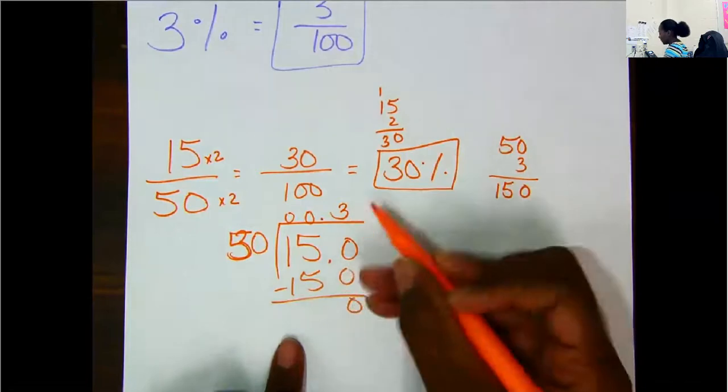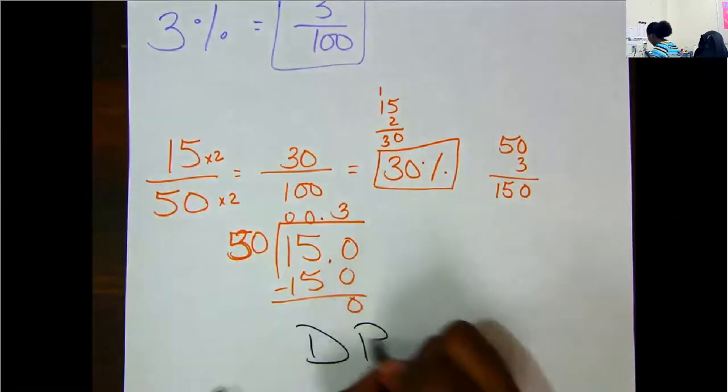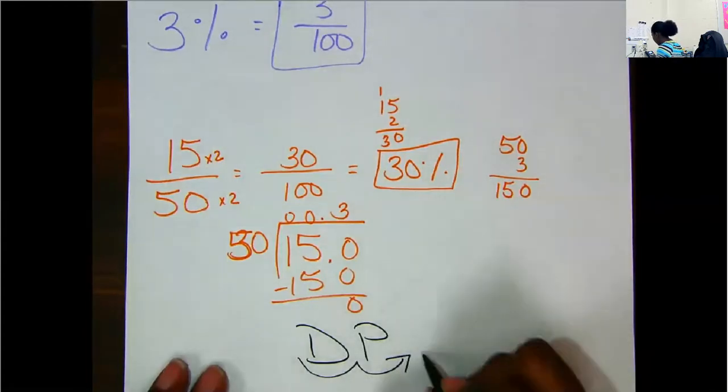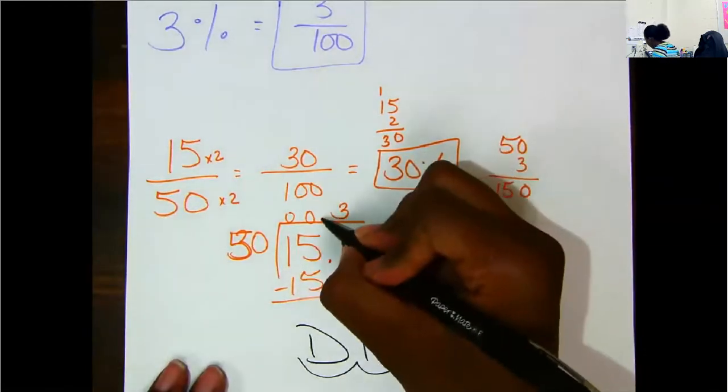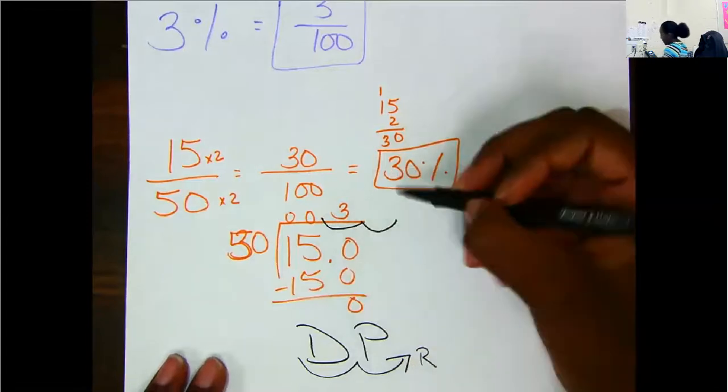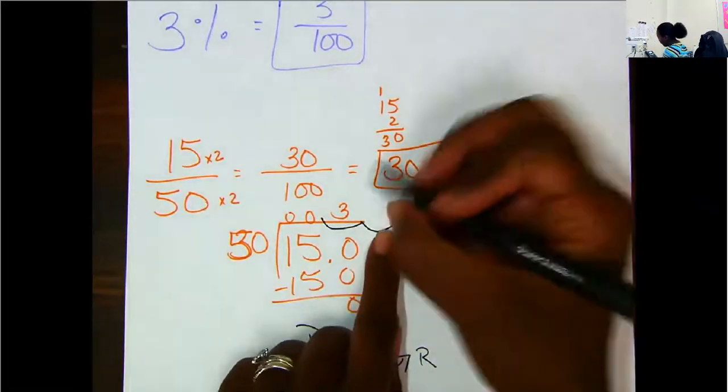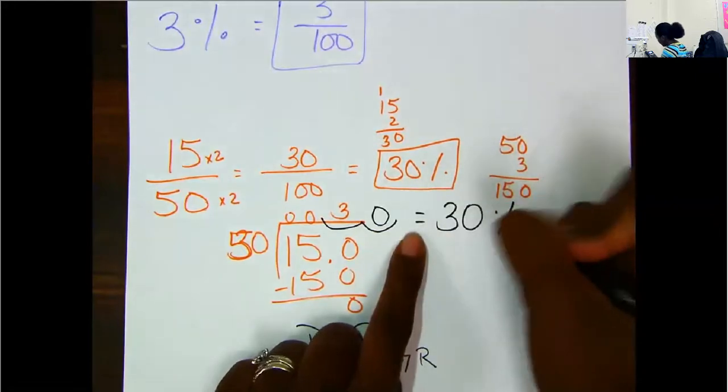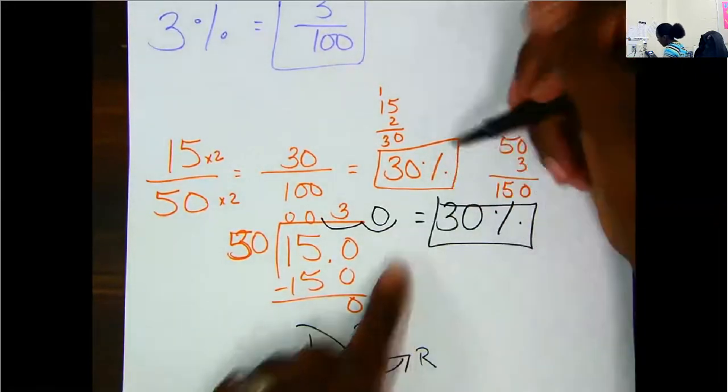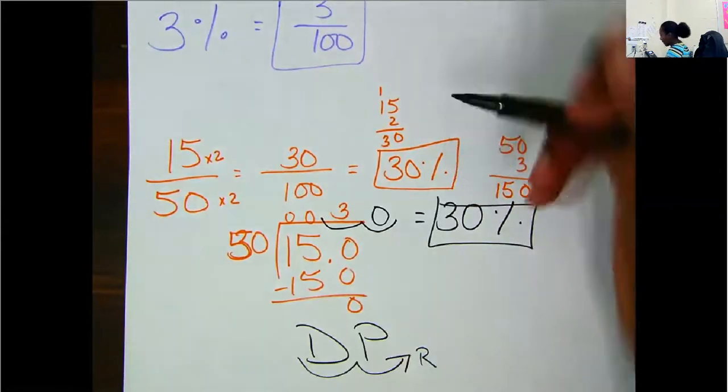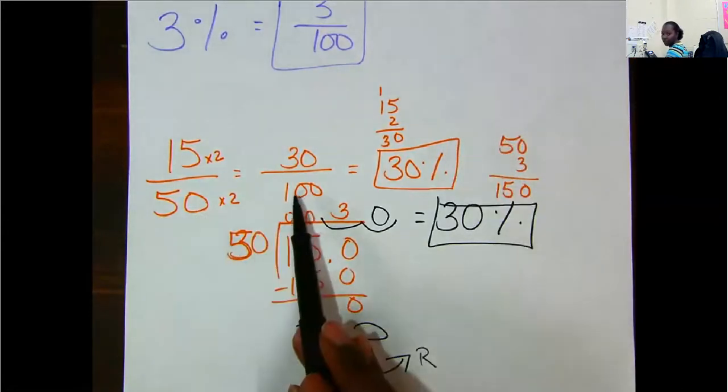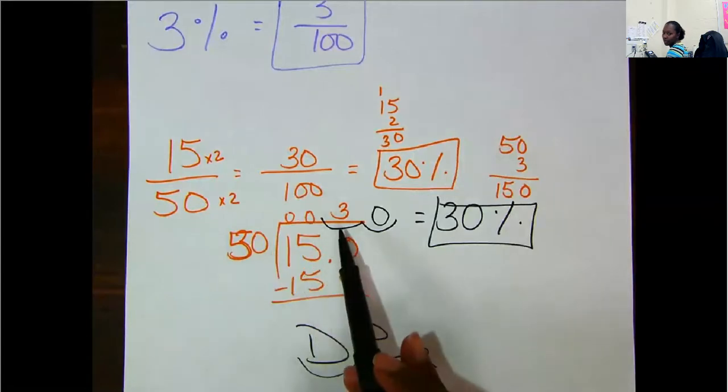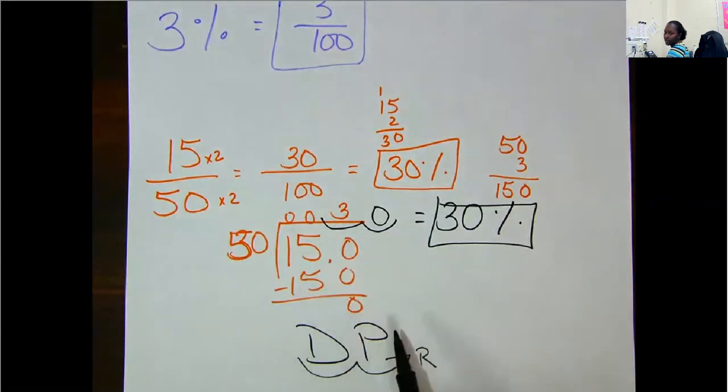So we've gotten a decimal, but remember, a decimal is not what they want. So we need to use Dr. Pepper. A decimal to a percent, I move 2 to the right. So here's my decimal, 1, 2. Remember, whenever you have an empty spot, you fill it with a 0. So our percent is 30%, which is the same thing we got up here.